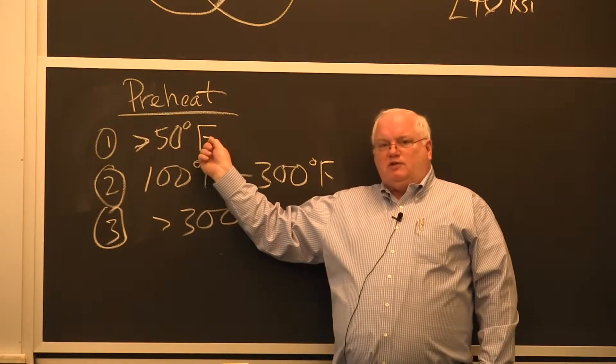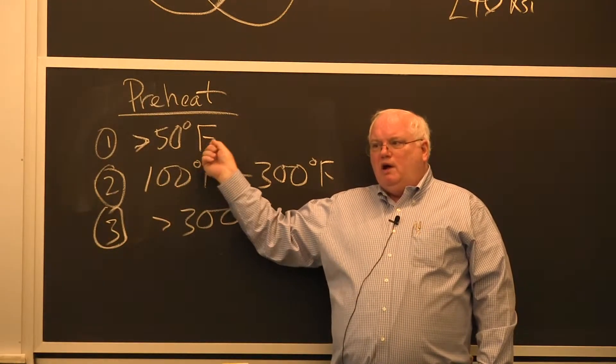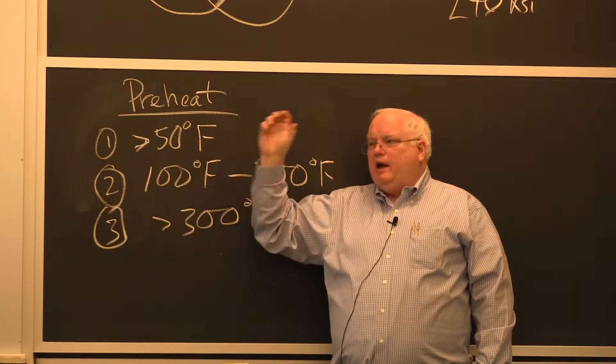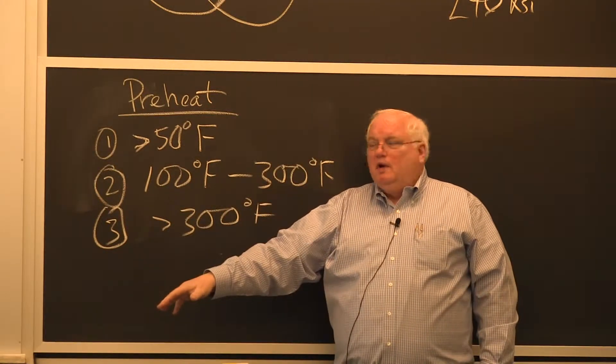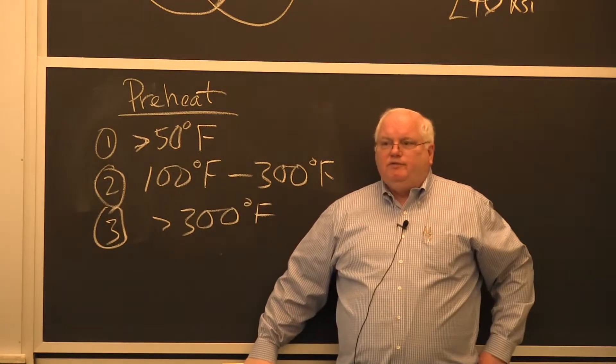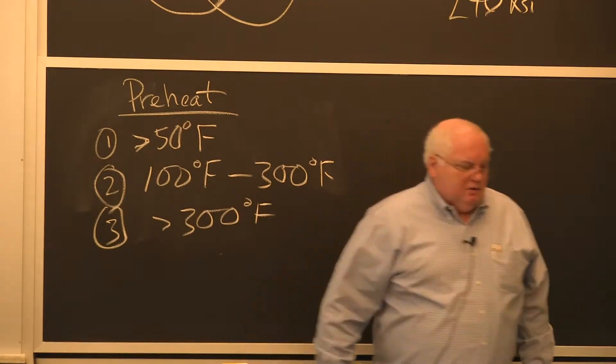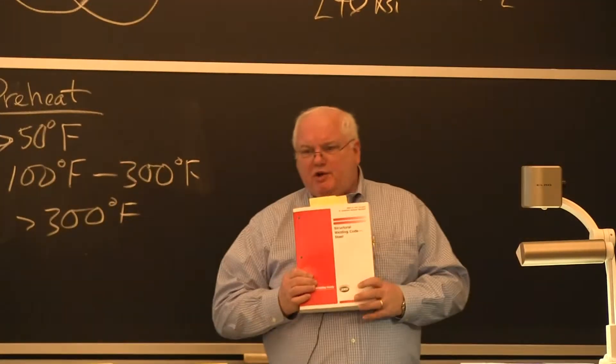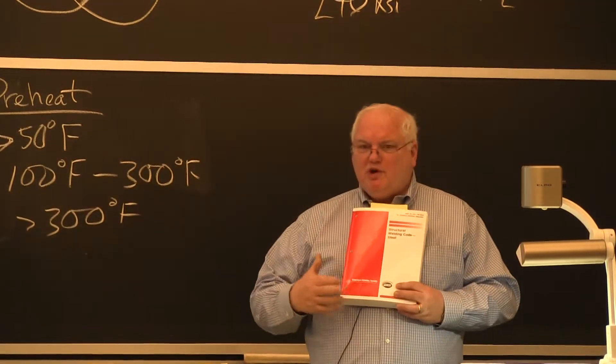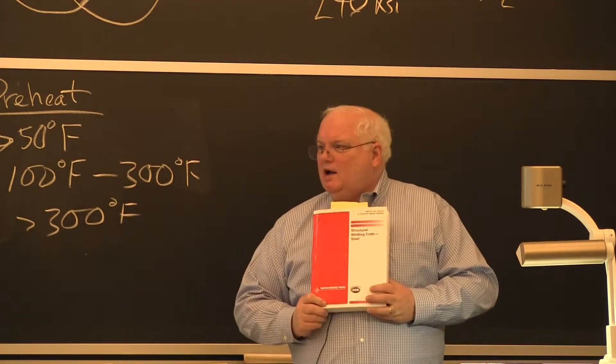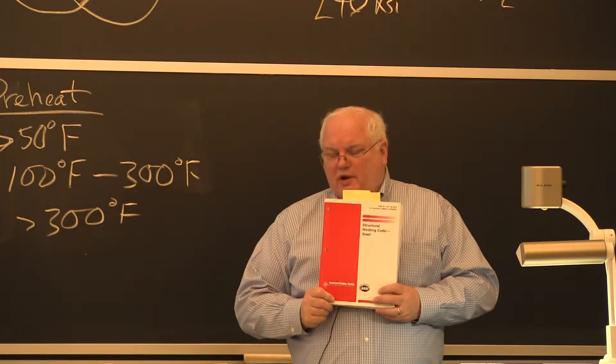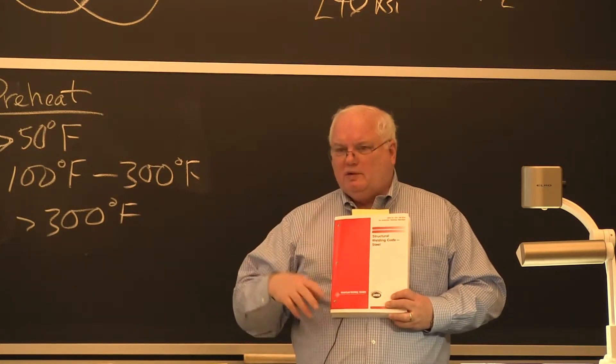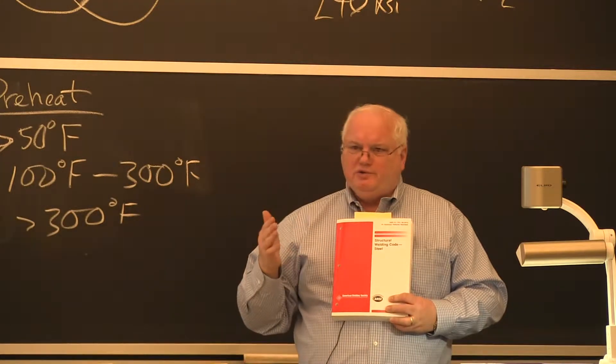The ASME boiler and pressure vessel code says you shall not weld on steel if it's below 50 degrees Fahrenheit. I don't care if it's the mildest steel in the world. You don't weld if it's less than 50 degrees Fahrenheit. The structural welding code, which is probably this, well, these two codes, ASME boiler and pressure vessel code. ASME is American Society of Mechanical Engineers for all you MEs. And the boiler and pressure and the structural welding code, which is basically the welding engineers or welding society, but civil engineers use it.